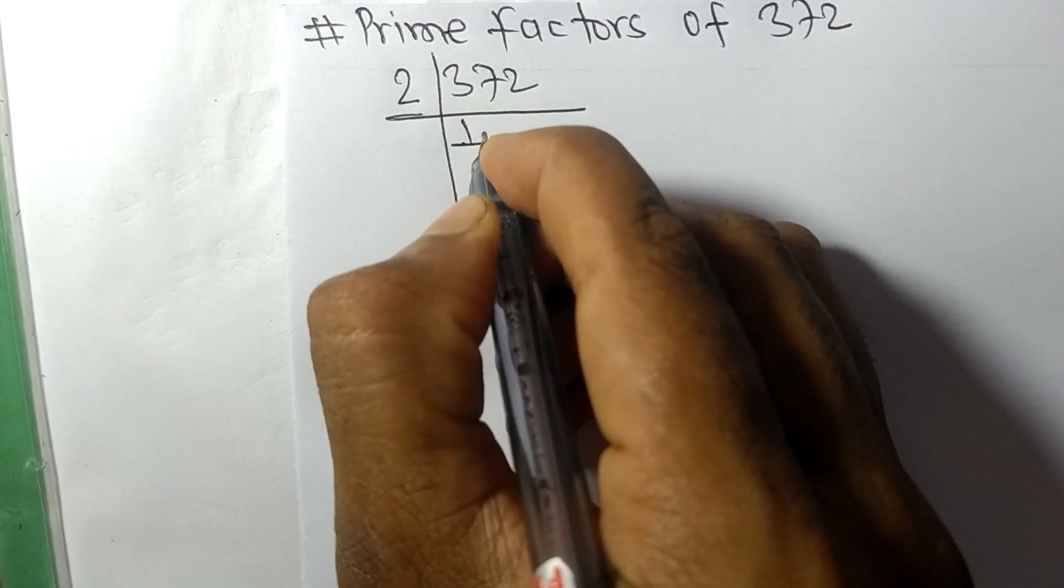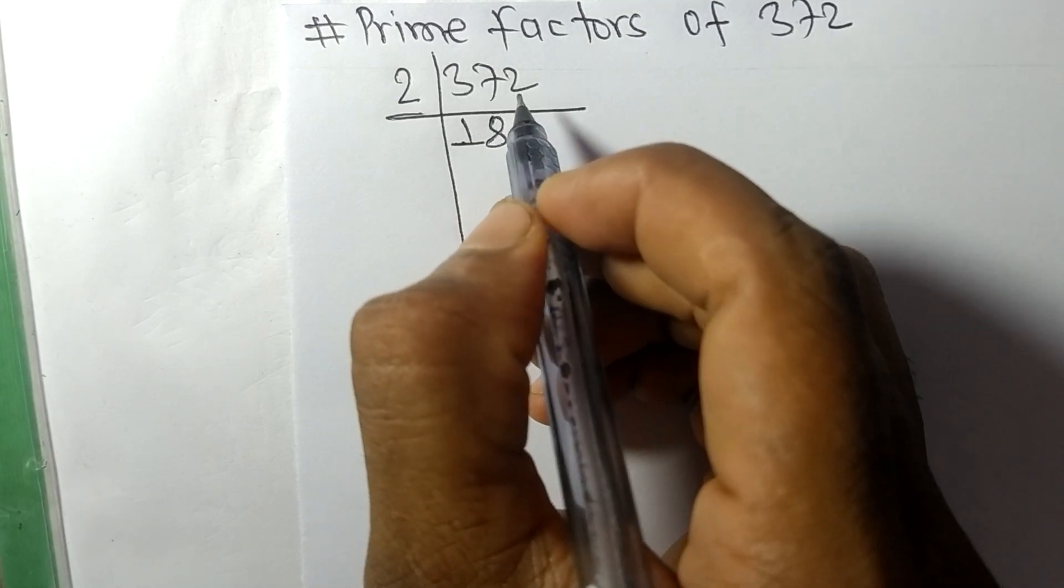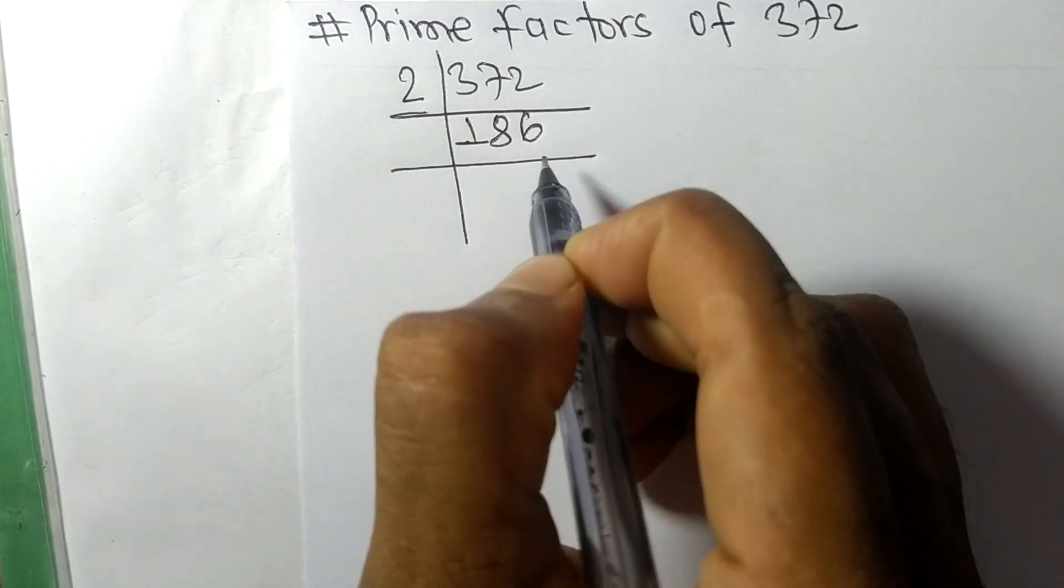2 times 8 equals 16 remainder 1, bringing down 2 to get 12. 2 times 6 equals 12, so we get 186 as our result.